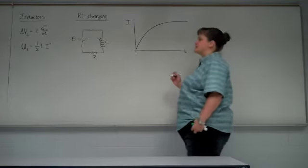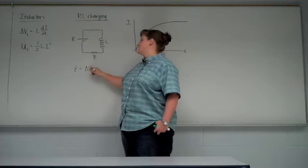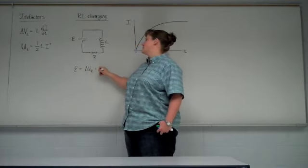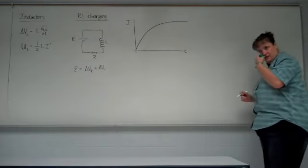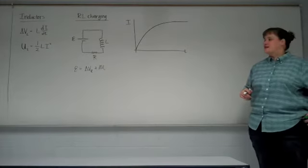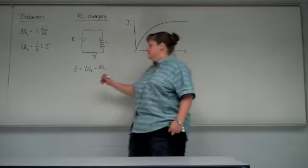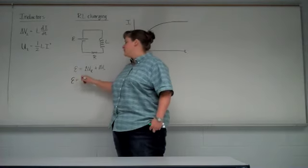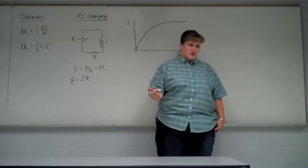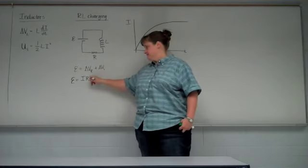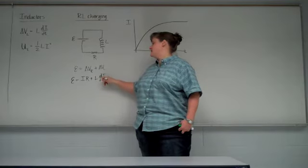Kirchhoff's loop rule still applies. Battery voltage in has to equal the voltage across the resistor plus the voltage drop across the inductor — their voltages added together have to equal the battery voltage. We know the voltage drop across the resistor is IR, so as long as there's current flowing through our resistor, there's a voltage drop across it. The voltage drop across the inductor is L·dI/dt.